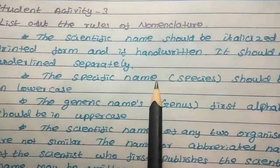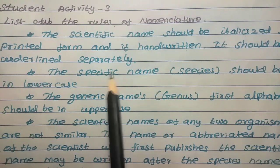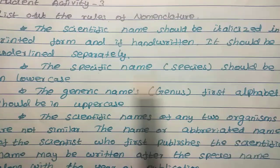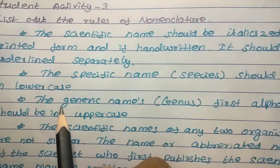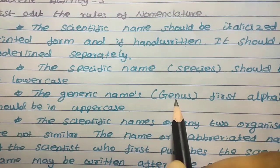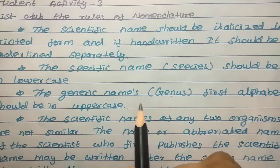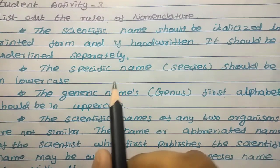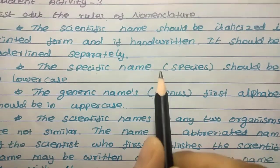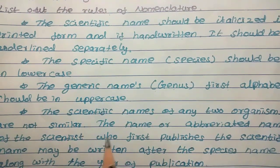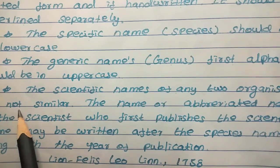The scientific name — species name — should be in lowercase. The specific name of species is in lowercase. The generic name — genus — the first alphabet should be in uppercase, that is capital. The generic name starts with a capital letter.